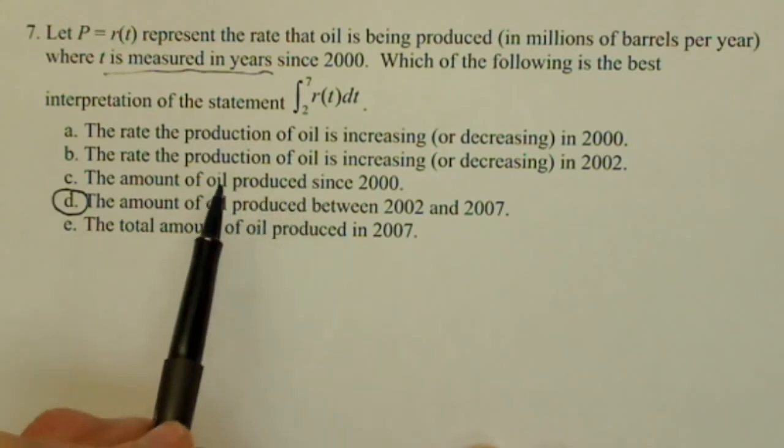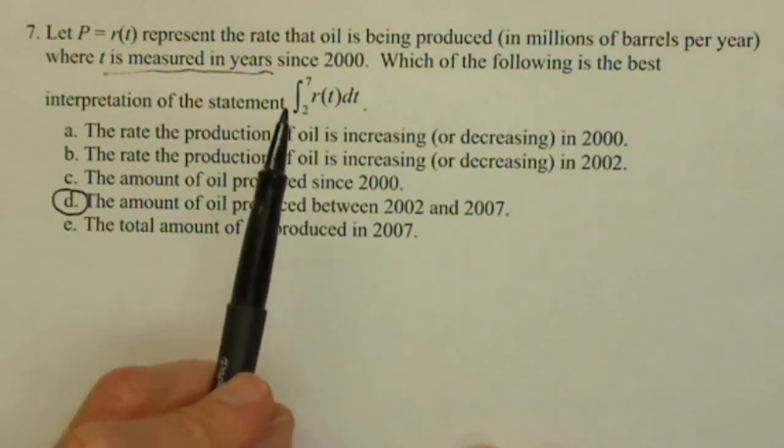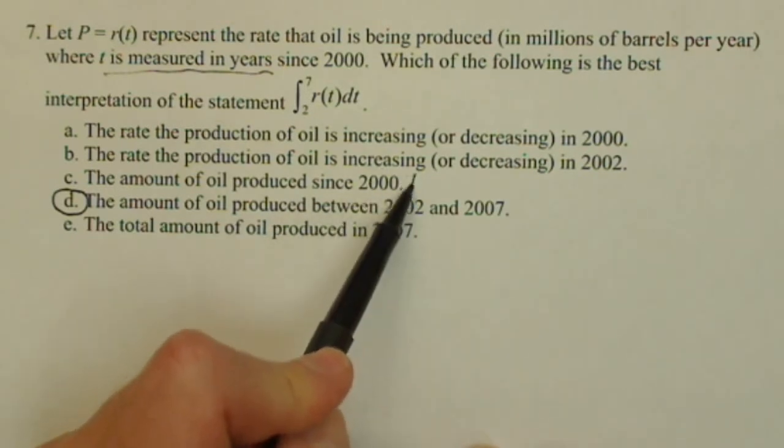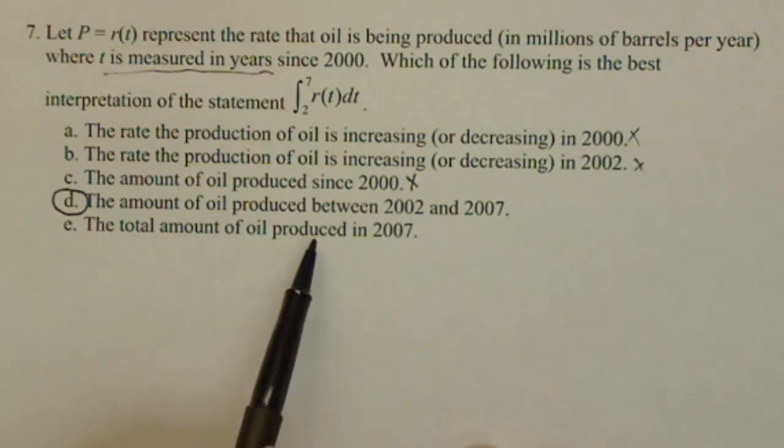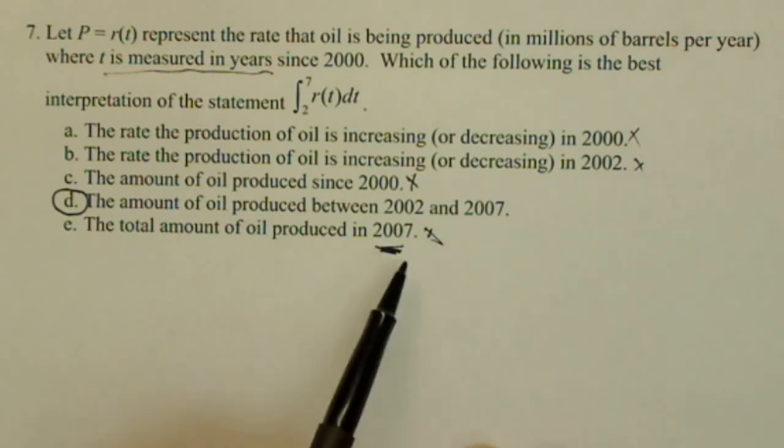The amount of oil would be good, but not since 2000. We said specifically this is talking between 2002 and 2007, so we don't want to include this one. And finally, the total amount of oil produced in 2007 - we would have to have different limits for it to be just 2007. We actually see that we have a five year range for this definite integral.